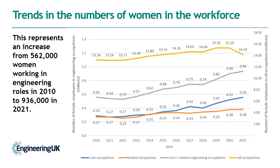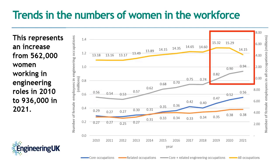In terms of actual numbers rather than percentages, the increase in proportion of women represents a rise from 562,000 women in 2010 to 936,000 in 2021 for core and related combined, coinciding with an overall expansion of the workforce from 5.3 million workers in 2010 to 5.6 million in 2021. Notably, the rise in women continued in absolute terms even when total engineering roles fell in the first year of the COVID-19 pandemic and overall numbers of women working fell. Looking at core and related separately, in the latter half of the decade there are actually more female employees in core engineering despite a lower proportion — meaning the core engineering workforce has seen larger increases and many of those additional roles have been filled by women.